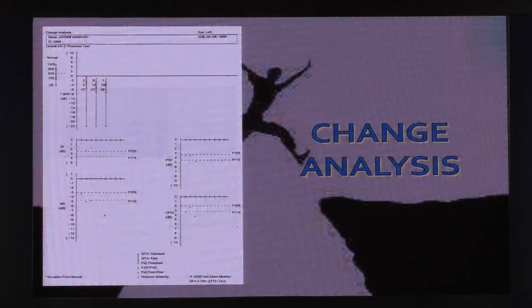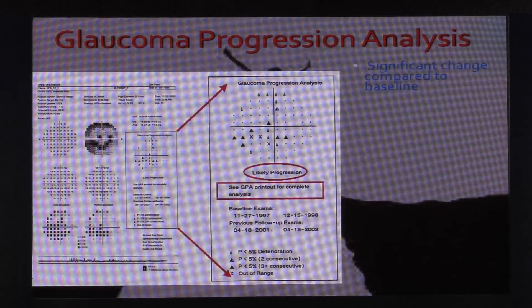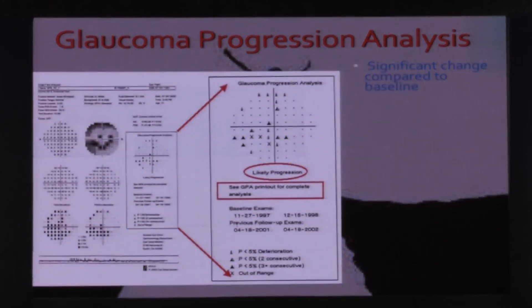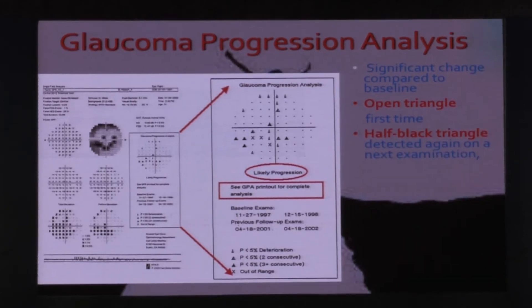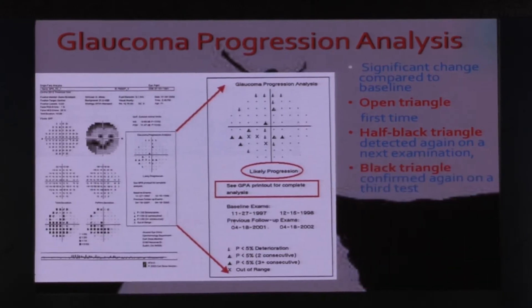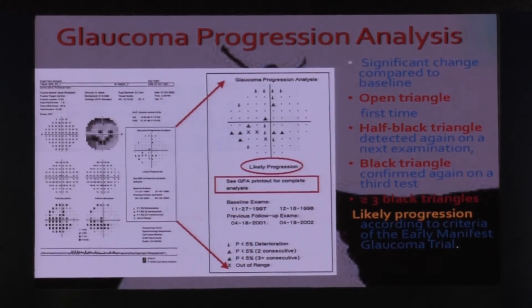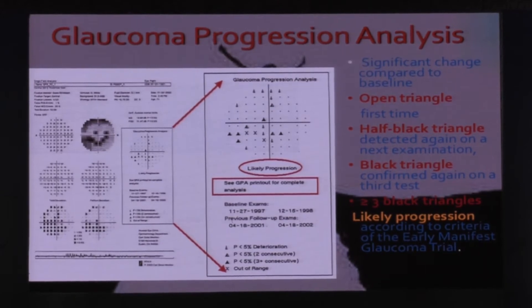Then you have the change analysis of the Humphrey, which also shows you progression over time. And finally, you have the latest in the last decade, the glaucoma progression analysis, which the Humphrey has put in almost every machine. It's a significant change compared to baseline. The open triangles that you see are the first-time ones which come on. The half-black triangles are detected again on next examination. And the black triangles actually confirm that there is progression. That's the third test you need to do. You basically need to do at least three to four tests to detect progression on the Humphrey. And then they give you a label like likely progression.